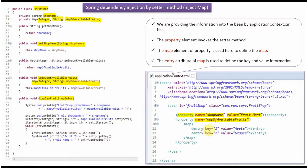The map contains two key-value pairs. The first key-value pair has key 1 and value apple. The second key-value pair has key 2 and value grapes. The map element is used to define the map, and the entry attribute is used to define key and value information.